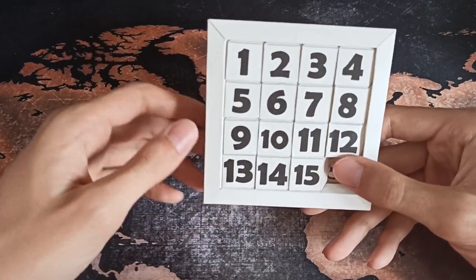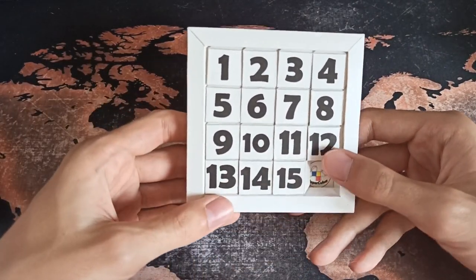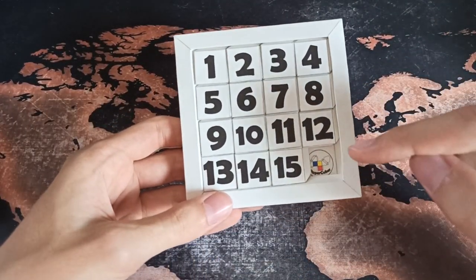And like that the puzzle is already solved. So, as you can see, all the numbers are sorted into ascending order and the empty space is on the bottom right.